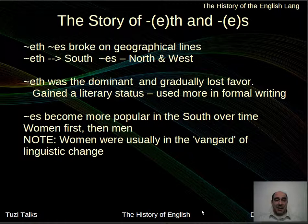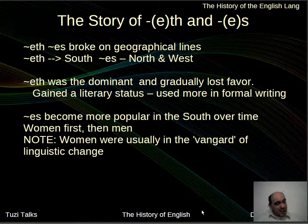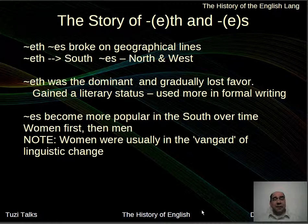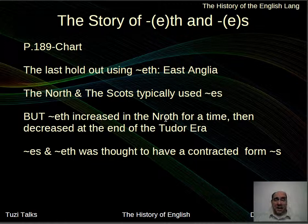-Eth was the dominant form in the south — goeth, cometh — and it gradually fell out of favor as -s became more popular. Initially the people using -s were women and then men. On page 189, there's a chart showing how the use of -eth and -s played out over time across different locations. Eventually most places stopped using -eth; the last holdout was East Anglia. The north and the Scots typically used -s.